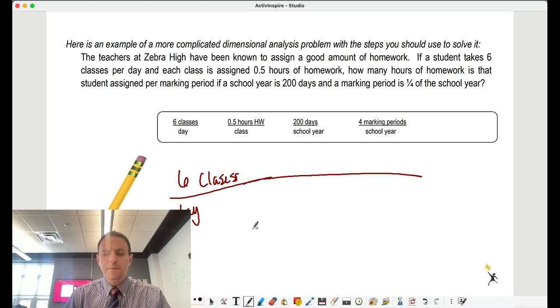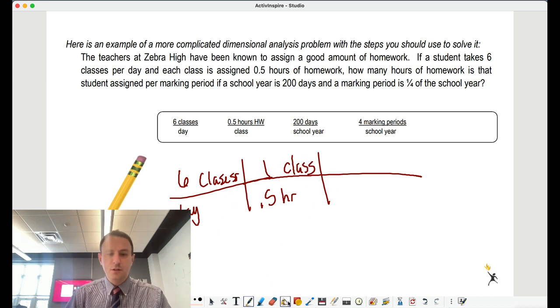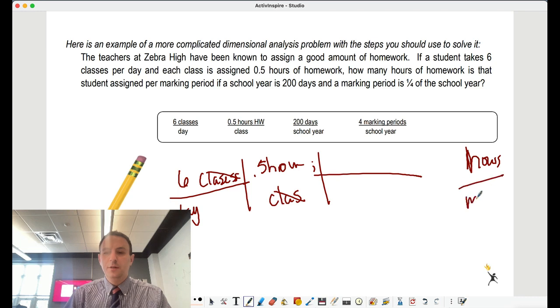So I want marking period to be left over, and I want hours to be left over. Those are the kind of keys I'm looking for. So if I know that we have six classes a day, so there's our first setup. But I want to make classes come up here. So one class, half of hours of homework. So now I've got to do my next step. We talked a little bit about how train tracks work. I need to get from hours. So I want hours left over.